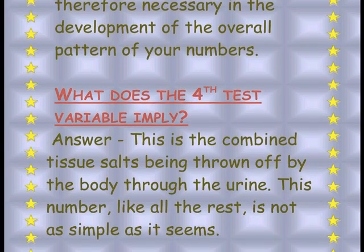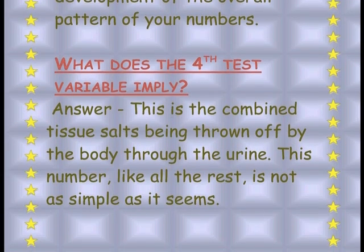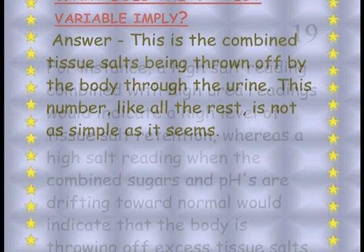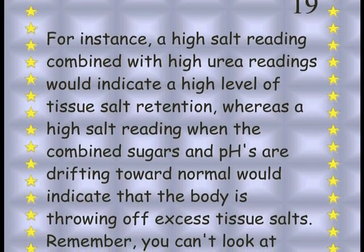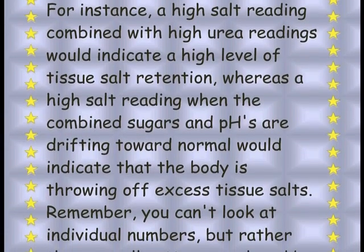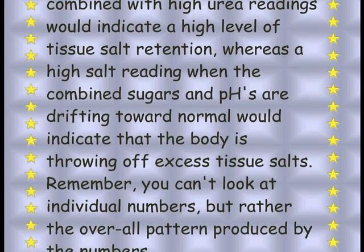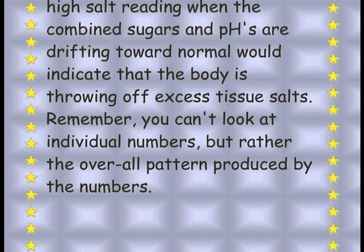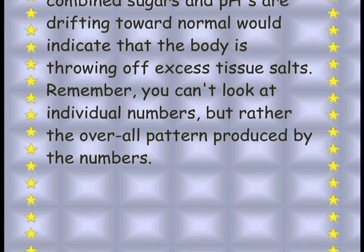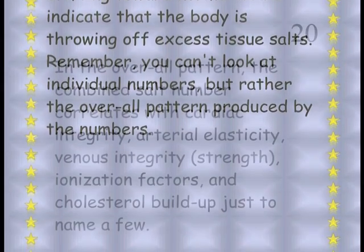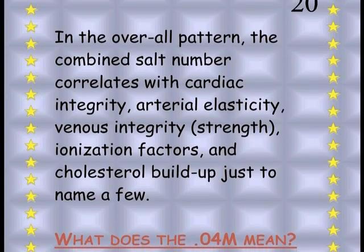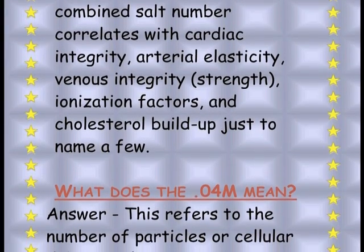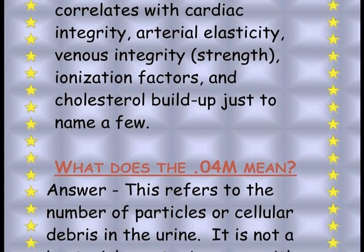What does the fourth test variable imply? This is the combined tissue salts being thrown off by the body through the urine. A high salt reading combined with high urea readings would indicate a high level of tissue salt retention, whereas a high salt reading when the combined sugars and pHs are drifting towards normal would indicate the body is throwing off excess tissue salts. In the overall pattern, the combined salt number correlates with cardiac integrity, arterial elasticity, venous integrity, ionization factors, and cholesterol buildup, just to name a few.